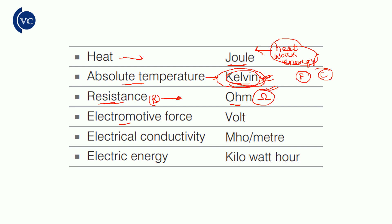Electromotive force and electric potential — the unit is Volt. Volt is the unit for both electromotive force and electric potential.